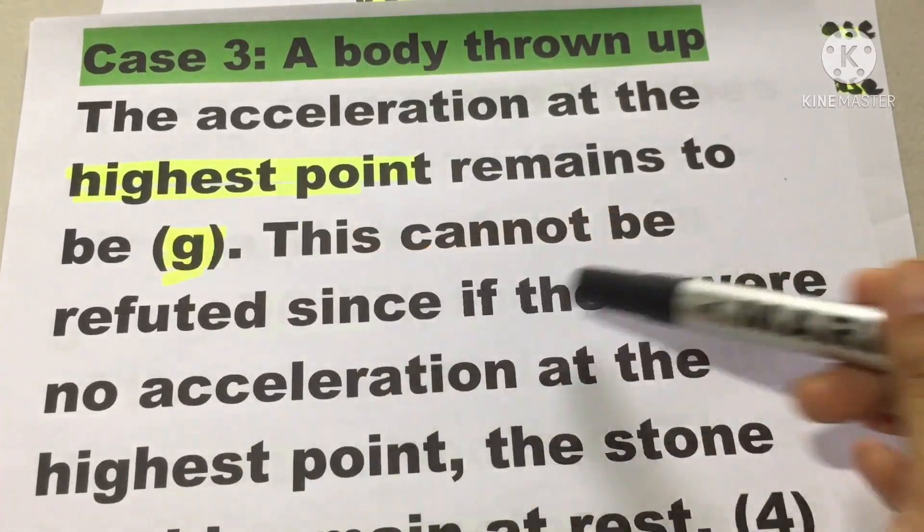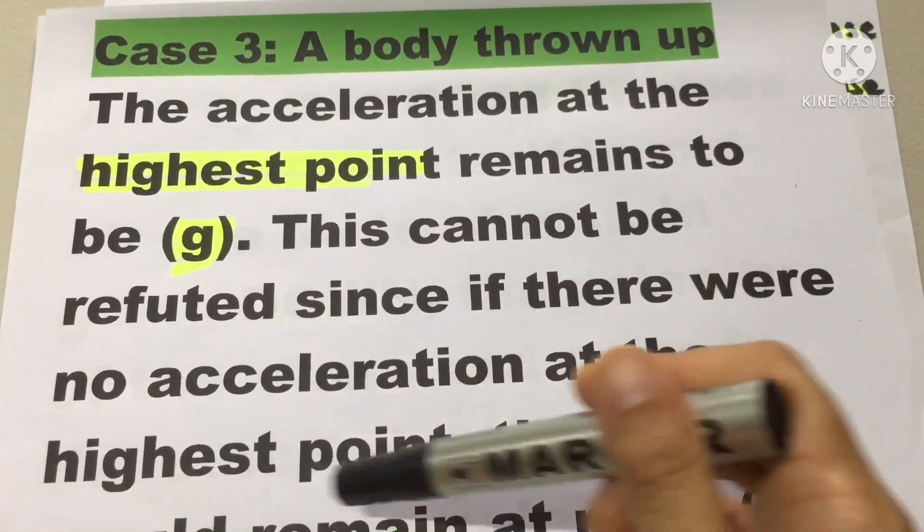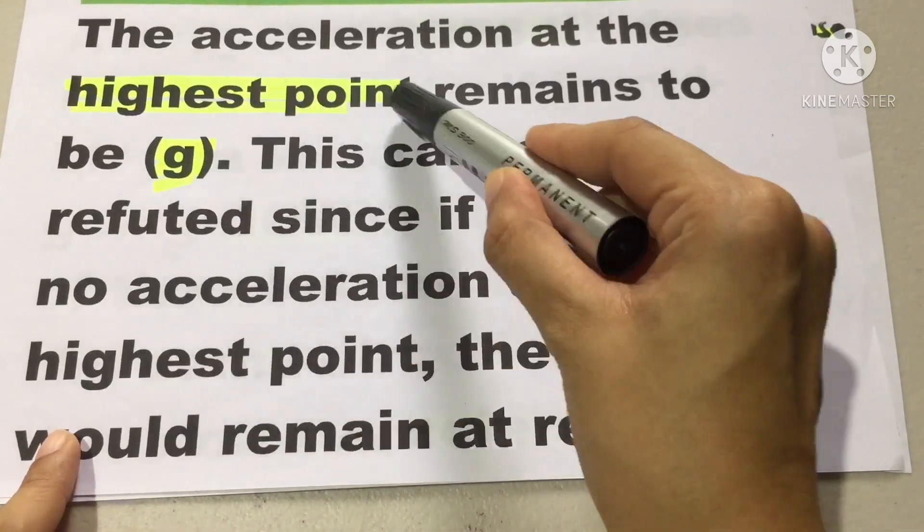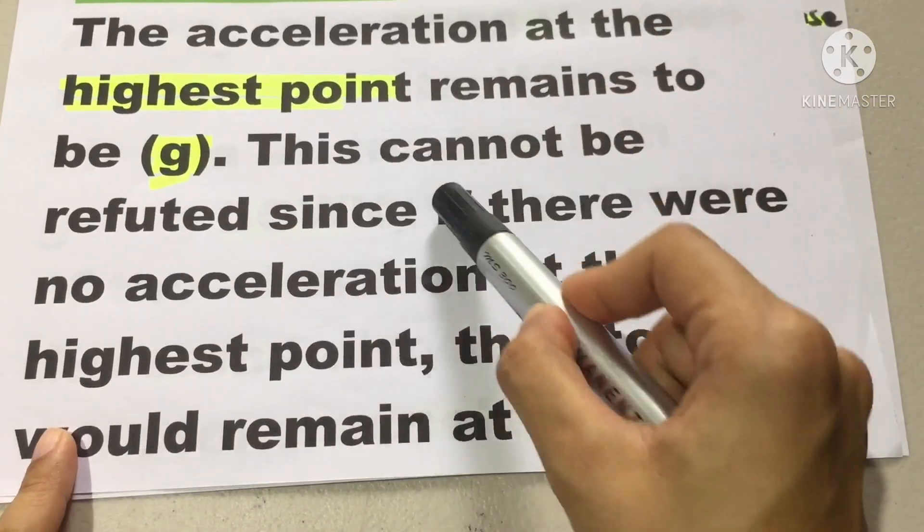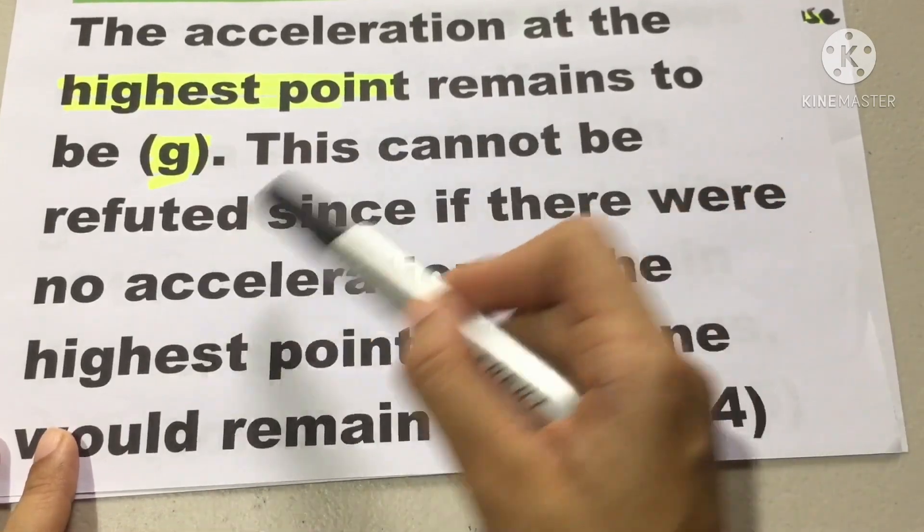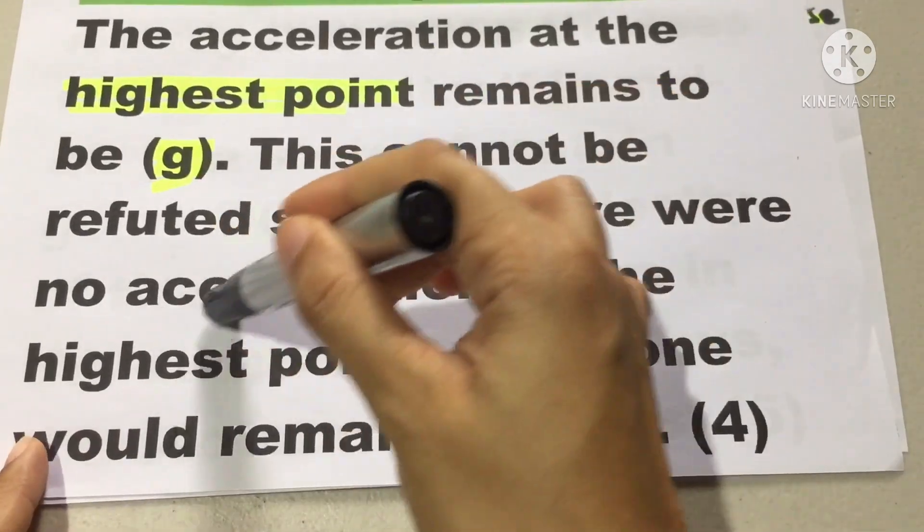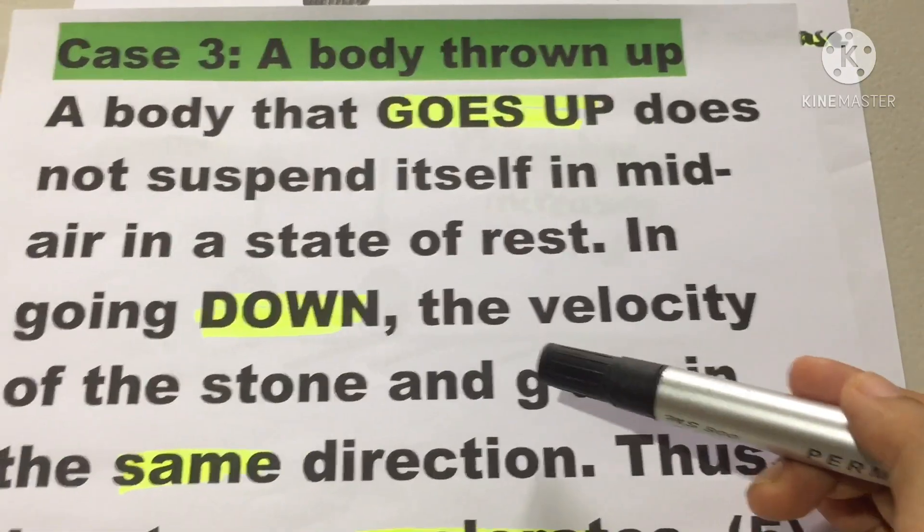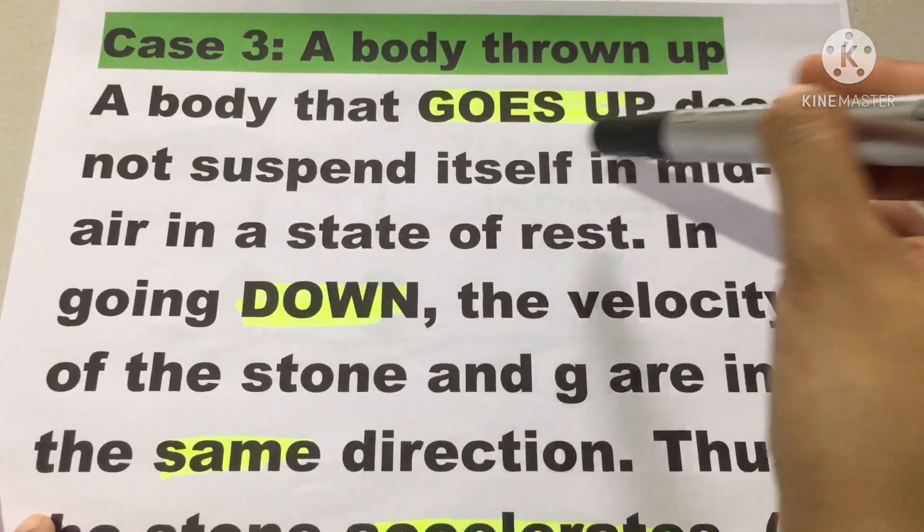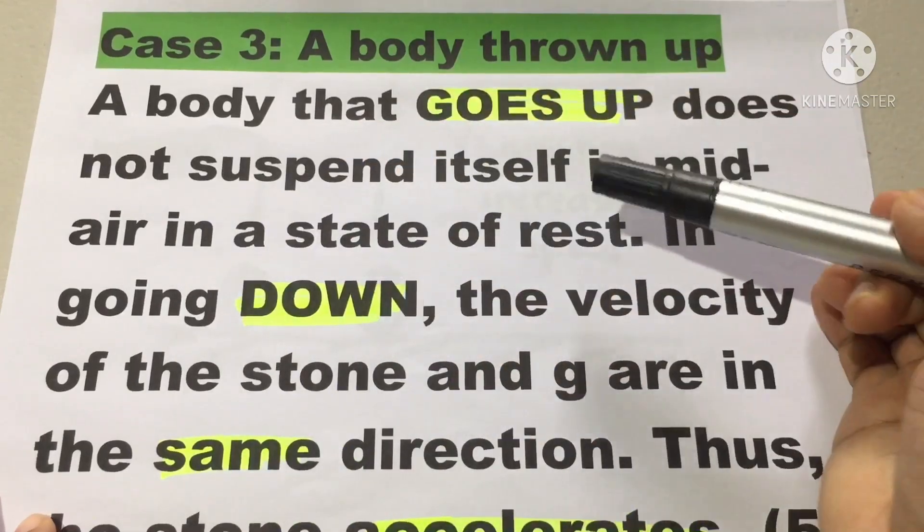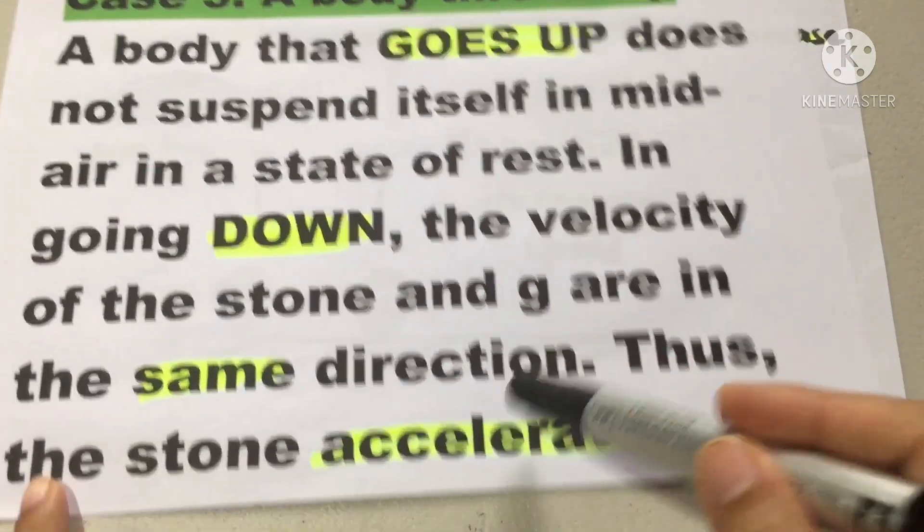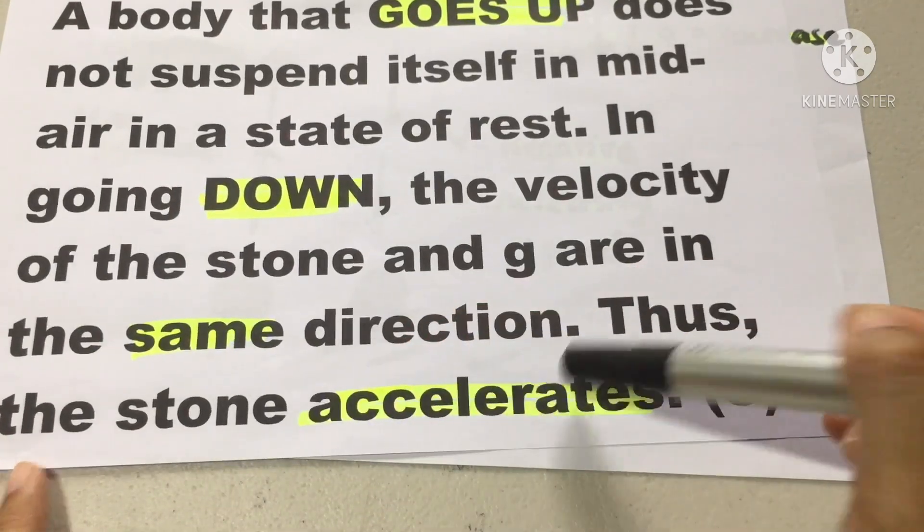At the highest point, the acceleration still remains to be gravity. This cannot be refuted since if there were no acceleration at the highest point, the stone will remain at rest. So it doesn't mean when it's at the highest point and it's zero momentarily, it stays there. What goes up, must come down. In going down, the velocity of the stone and gravity are in the same direction now. Thus, the stone accelerates.